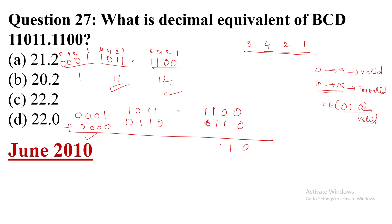Now performing the binary addition: adding the correction values to each group. Carrying through each bit position — 1 plus 1 gives 10, write 0 carry 1 — repeating this for each bit. The carry propagates through all positions until the addition is complete.